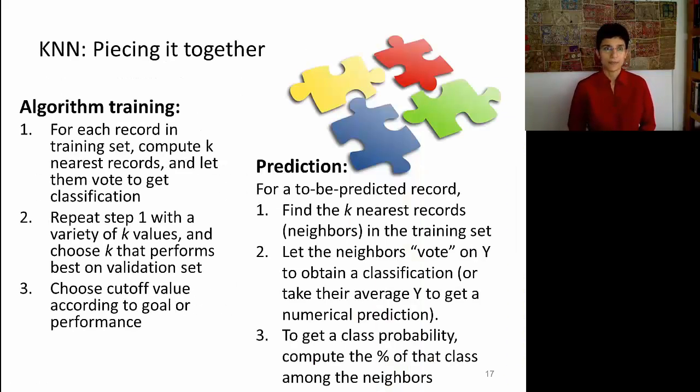So let's summarize KNN. How does the algorithm train? We give it a large set of data, and for each record in this training data, we're going to compute the K-nearest records and let them vote to get a classification. This step is going to be repeated with different values of K in order to determine the best K. And in order to do that, we're going to have to use the validation set, which means that the algorithm is no longer agnostic to the validation set. That's why we also need a third test set to evaluate performance. And lastly, we're going to have to choose a cutoff value in order to convert the votes, which give us a percentage, or a probability, into an actual classification. Okay, so that was the training phase.